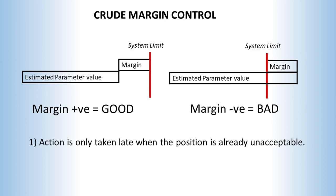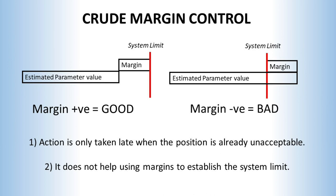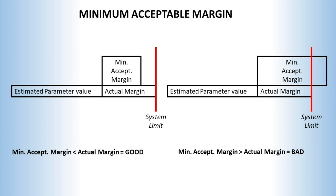There are two key problems here. Firstly, when a negative margin requires action, it's already unacceptable and it probably occurs later in the development programme when resolving such problems is expensive. Secondly, it is an inadequate way to establish what the system limit should be set at in the system design phase. In short, this is not using margins as a way to plan forwards. We need to establish if the positive margin we currently have is large enough to cope with later growth from things we've forgotten, mistakes in estimating, the impact of design changes, build errors, and the like. We need rules to determine the minimum acceptable margin for our position at any stage, to be reasonably sure we won't get into trouble later.